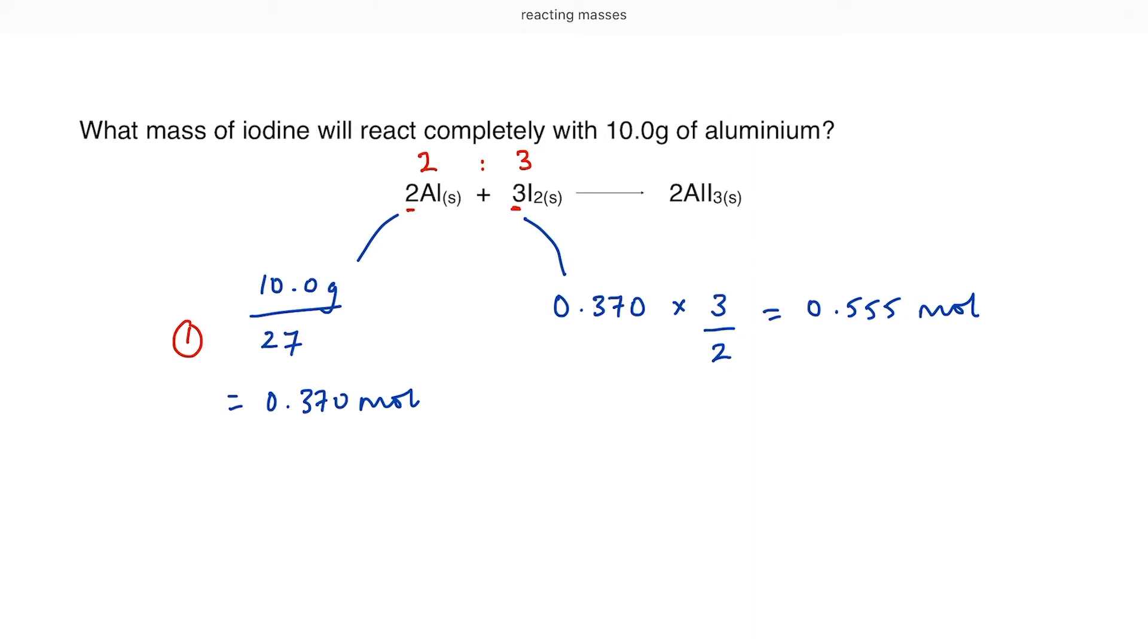Now I know my number of moles of iodine. I simply have to turn this back into a mass. So step number three. Number of moles times the molar mass of iodine. The molar mass of iodine is 253.8. That is the molar mass for a molecule of iodine, I2. Once again, I'm not including the big three. The big three was part of the balancing, part of the ratio. It is not part of the molar mass. And the answer comes out at 141 grams.